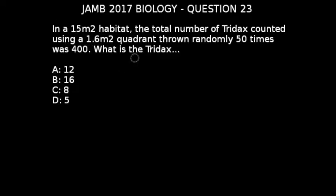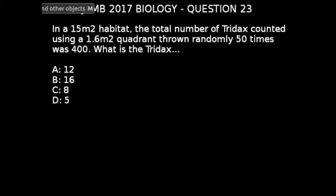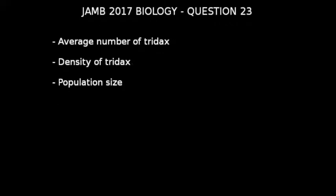This is an incomplete question — we are supposed to have another parameter attached after 'tridas,' so we can't give the correct answer. But we'll look at other parameters that you'll be asked when faced with questions like this. The possible things you may likely be asked are: average number of tridas, density of tridas, and population size.